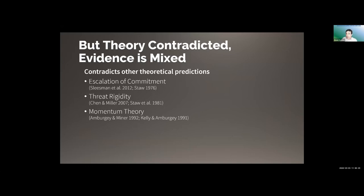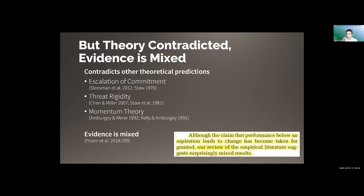Trailing aspirations may sound intuitive — the notion that when things don't go as intended you try something else — but as Posen and his collaborators show in a vast review of the literature published recently, this is contradicted by other well-supported theories like escalation of commitment. The idea that precisely because things are not going well, you throw more forces in and become even more committed — which one is it? Furthermore, Posen and collaborators point out that the empirical evidence for the aspiration-performance gap is actually mixed. So we aim to take this notion and test it in the controlled environment of the lab. How do we do it? We do it with three studies.